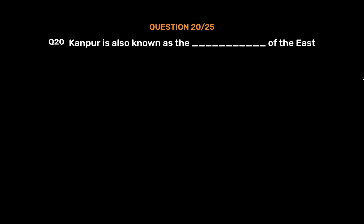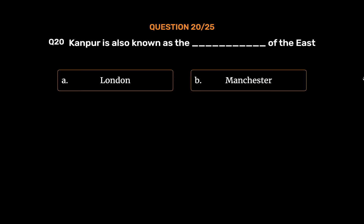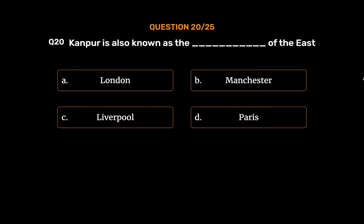Question No. 20: Kanpur is also known as the blank of the East. Option A: London. Option B: Manchester. Option C: Liverpool. Option D: Paris. The correct answer is Option B: Manchester.